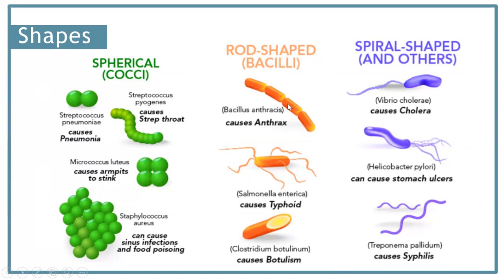Some examples of rod-shaped bacteria are Bacillus anthracis, which causes anthrax; Salmonella enterica, which causes typhoid; and Clostridium botulinum, which causes botulism. The final shape category is spiral-shaped bacteria. Some examples are Vibrio cholerae, which causes cholera; Helicobacter pylori, which causes stomach ulcers; and Treponema pallidum, which causes syphilis.